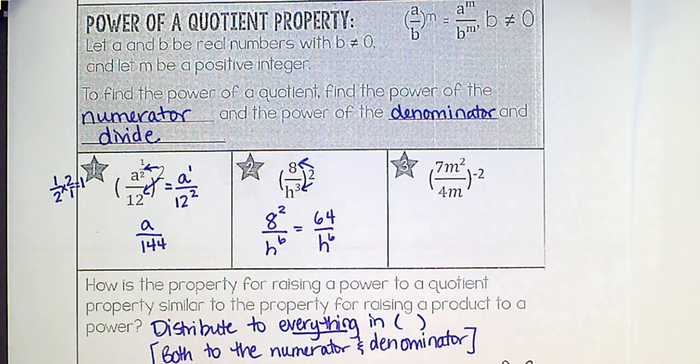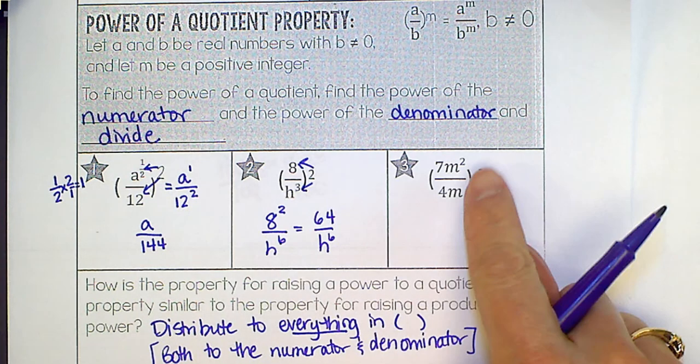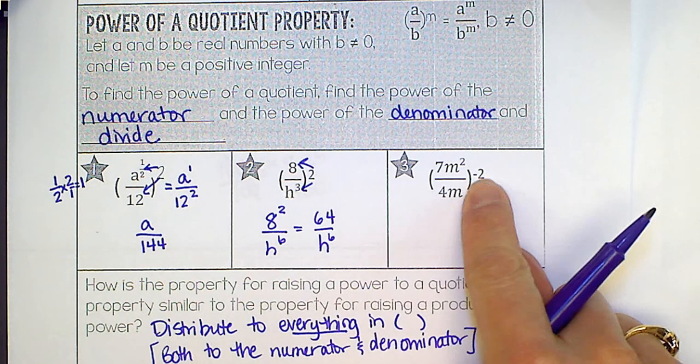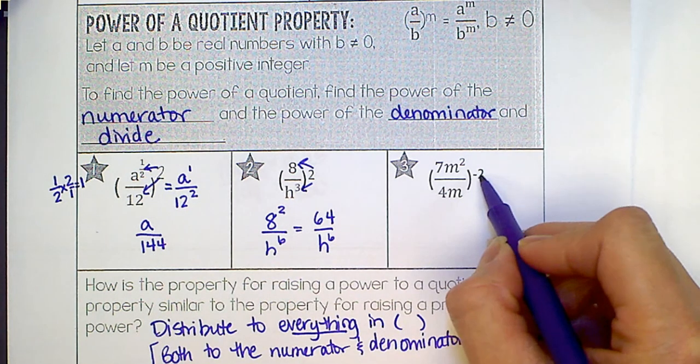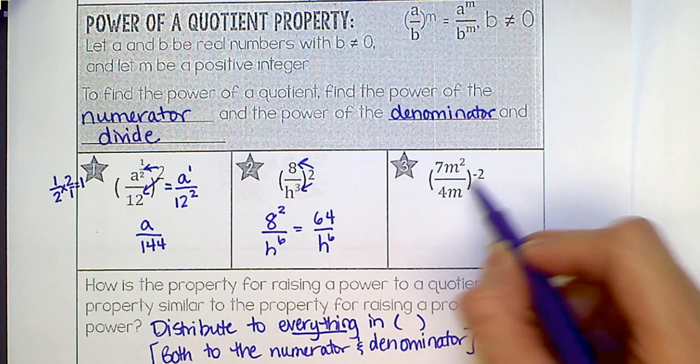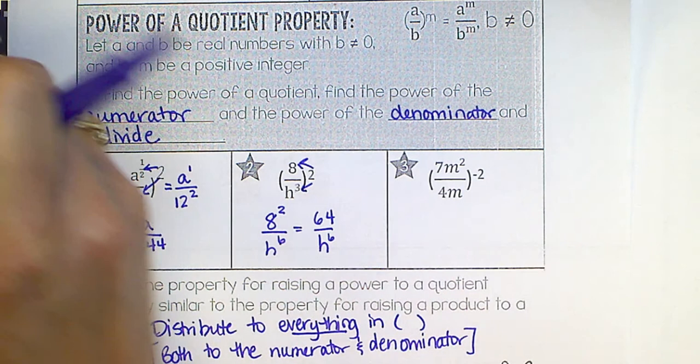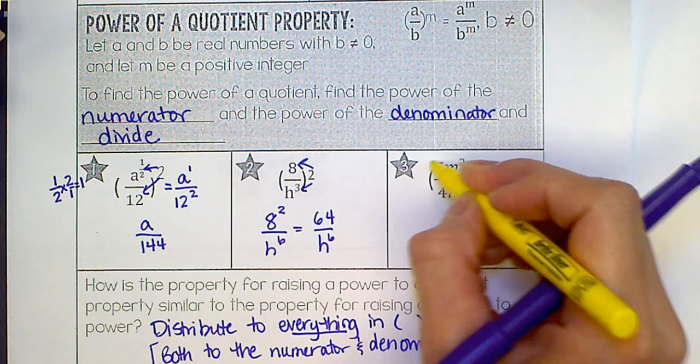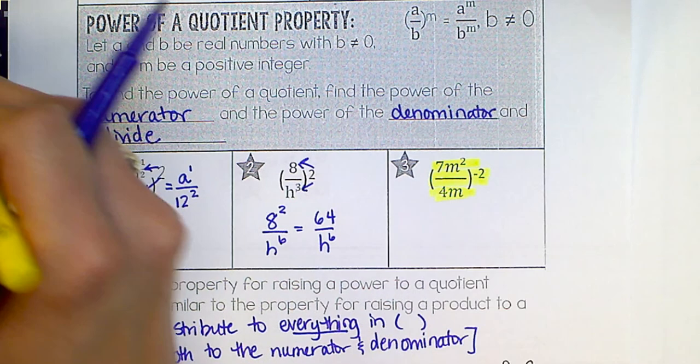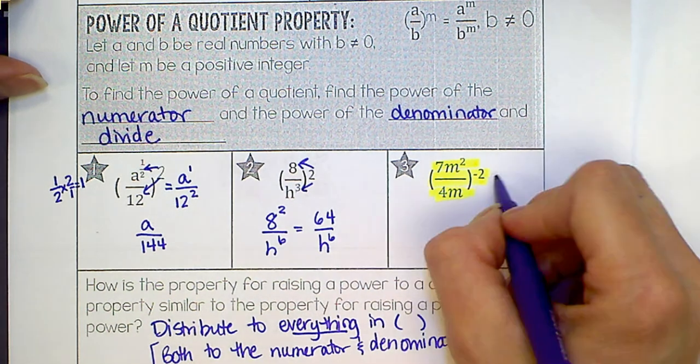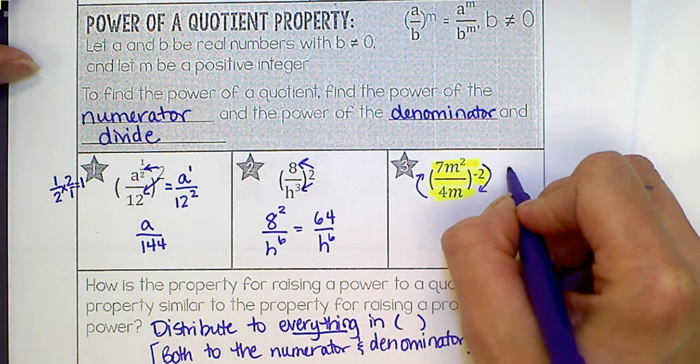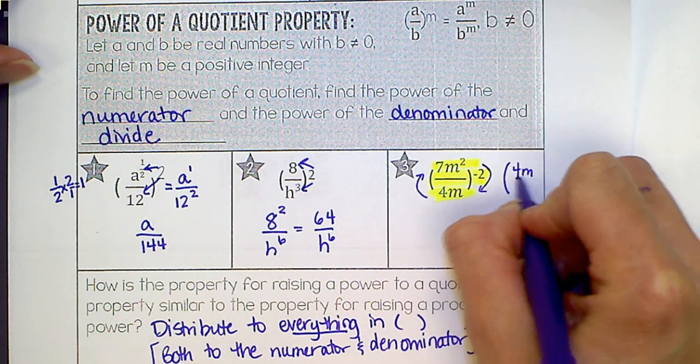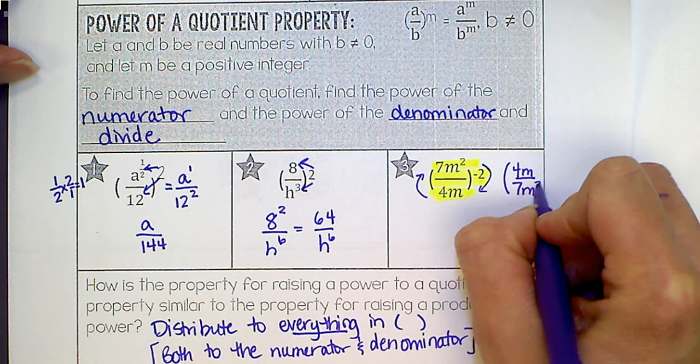And the last one here, we can do a couple of different things. Since this is negative, we could go ahead and flip this around first and make this a positive, or we can distribute this as a negative 2. Now I'd be very careful. I would actually go ahead and flip this over, take the reciprocal. That way we can make our exponent positive. So we really will have 4m over 7m squared to the positive 2.